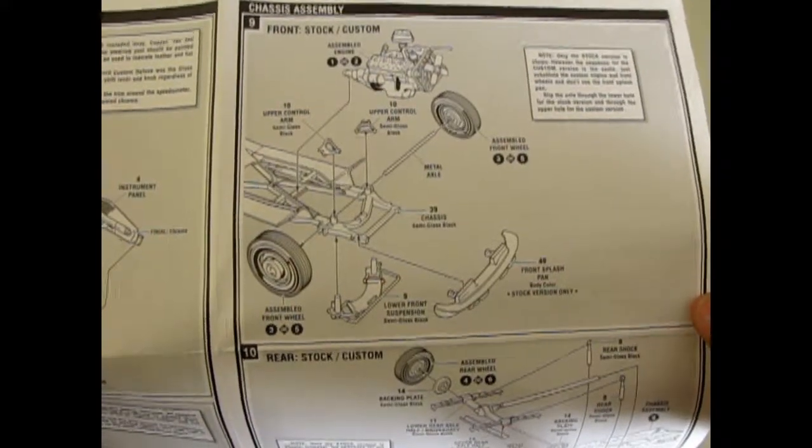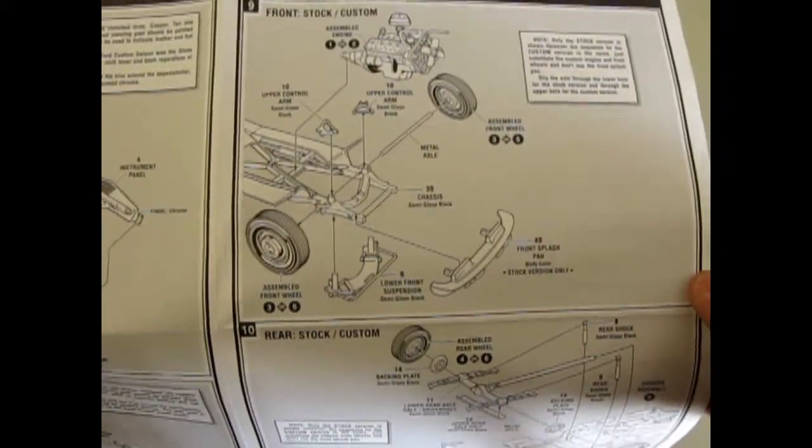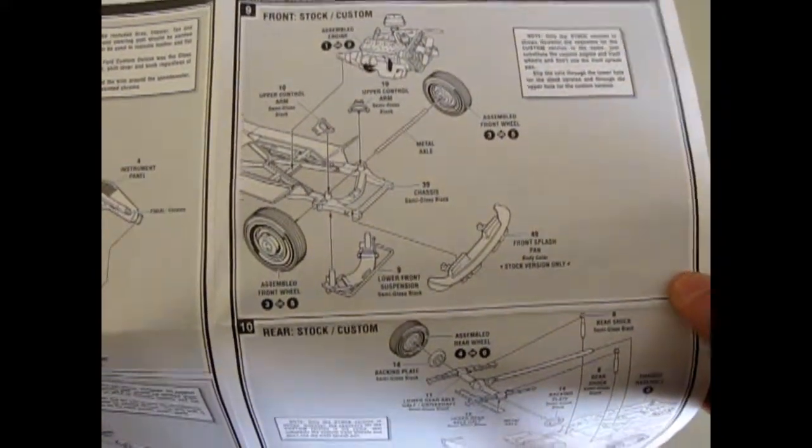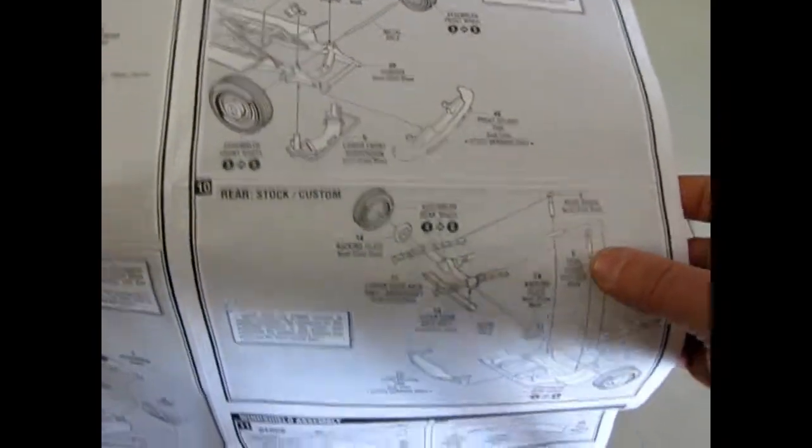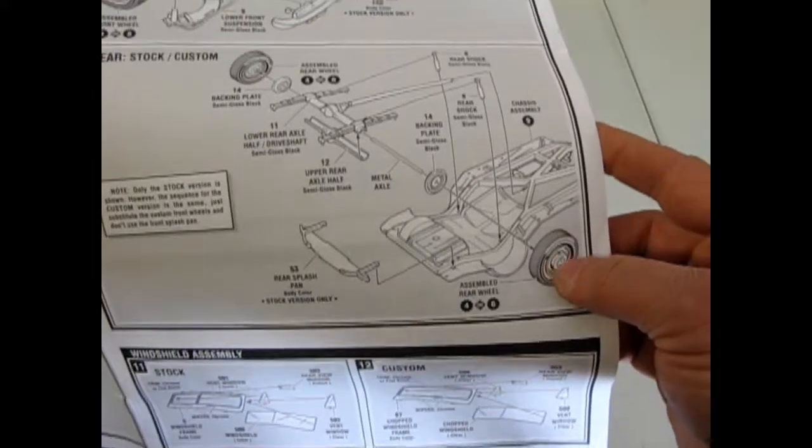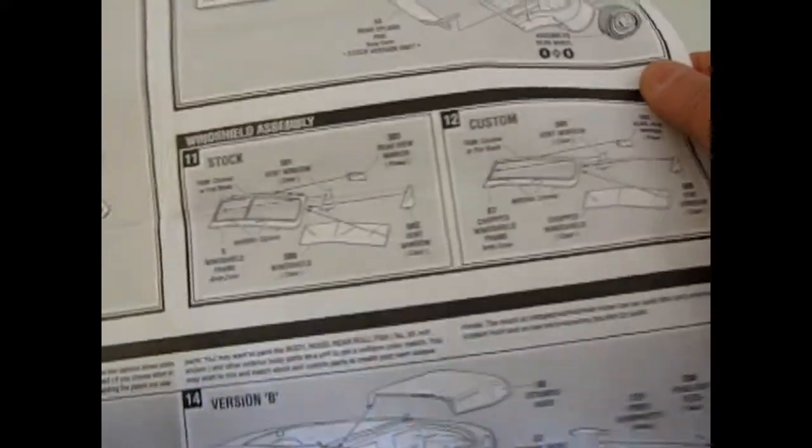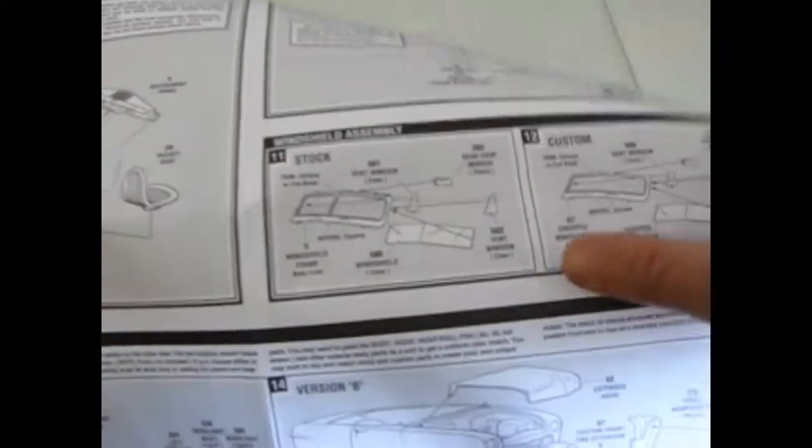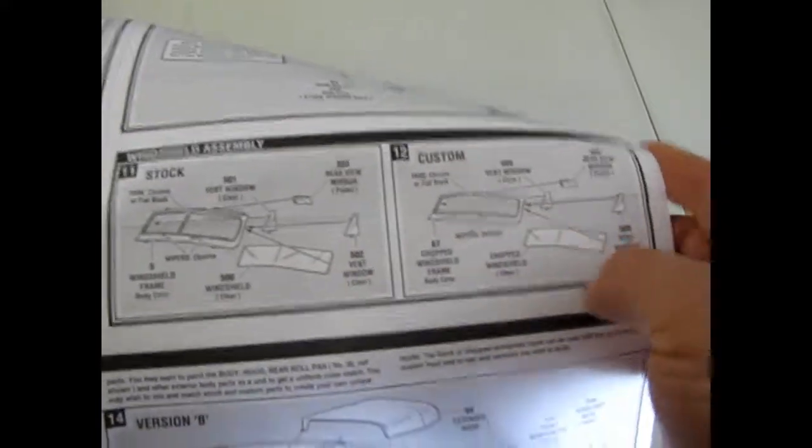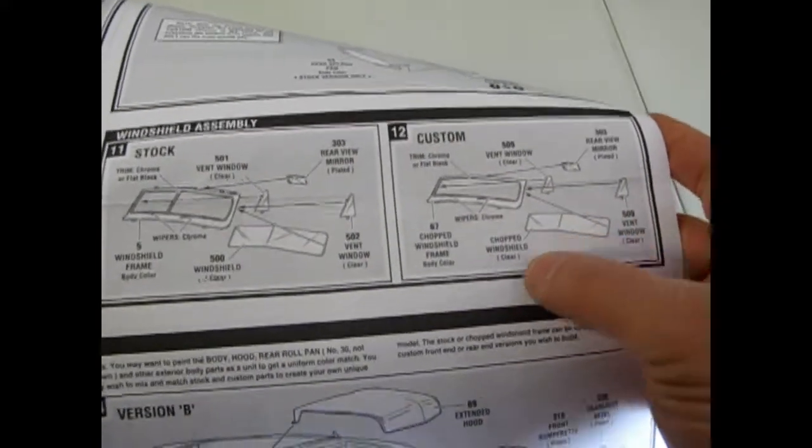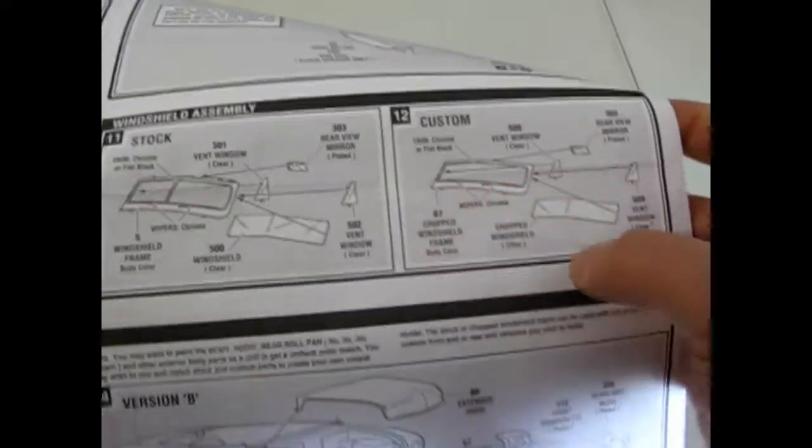Here is our location for our front bumper, front splash pan for our bumpers, and how the suspension goes together. And of course here is the rear. And then you have a choice of the full stock height windshield or the chopped windshield with a V-butted windshield. V-butted because they took the post out.